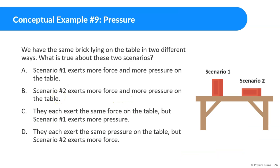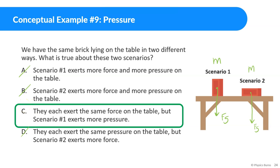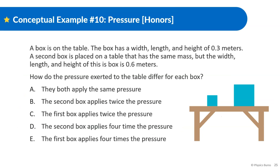Let's look at this example: we have the same brick lying on a table in two different orientations. Scenario A says number one exerts more force and pressure; scenario B says number two exerts more force and pressure; scenario C says they exert the same force but number one exerts more pressure; scenario D says same pressure but number two exerts more force. Since it's the same brick, they have the same mass and therefore the same weight, so the same force. The only real option is C — scenario one exerts more pressure because its surface area is smaller.